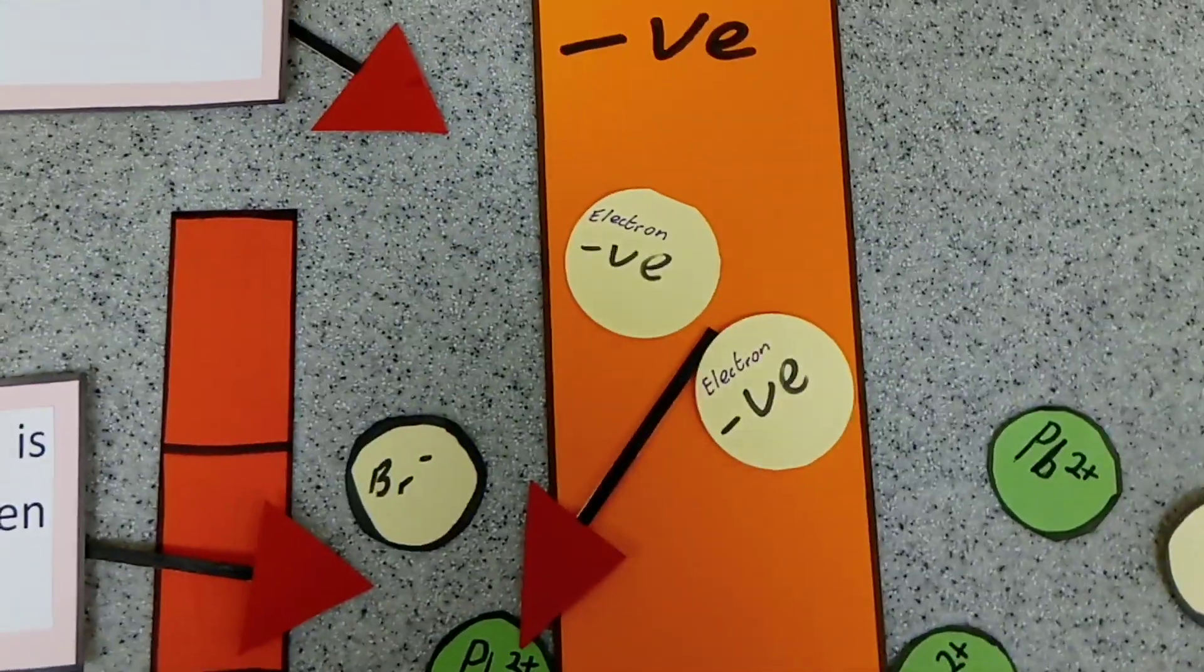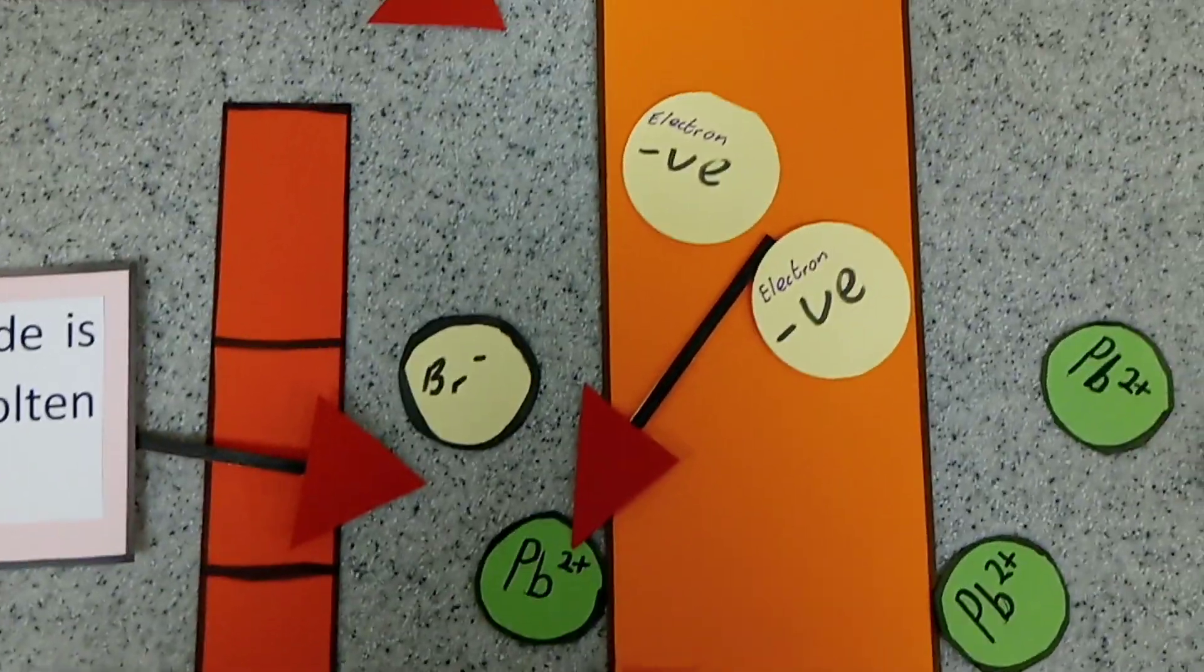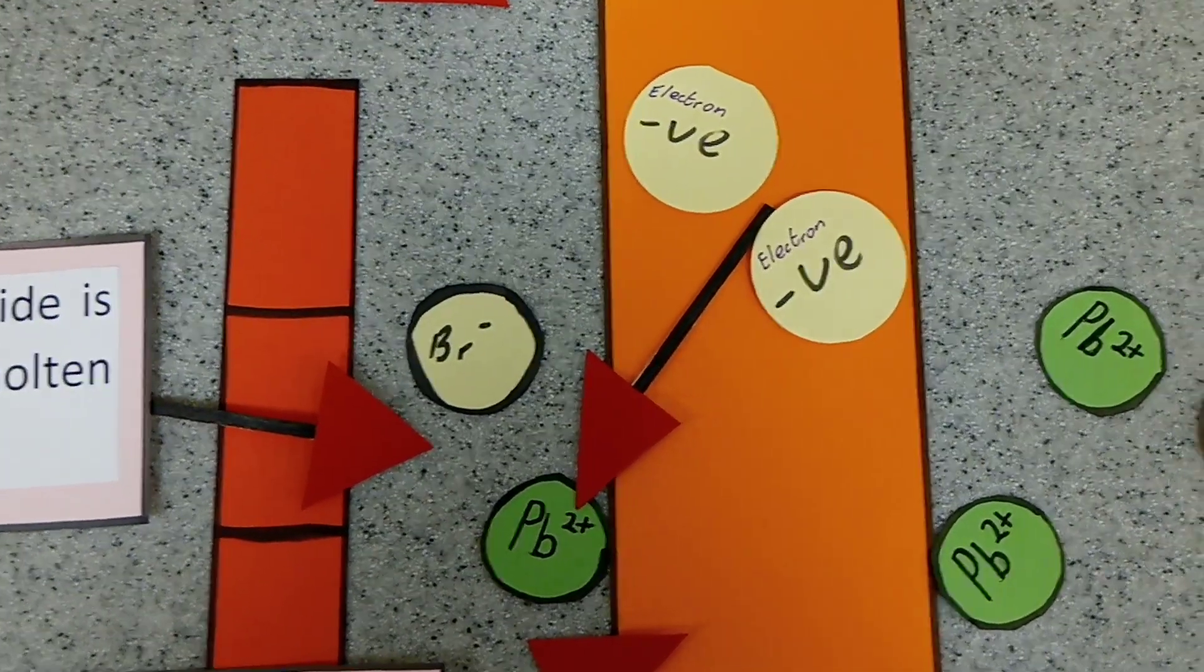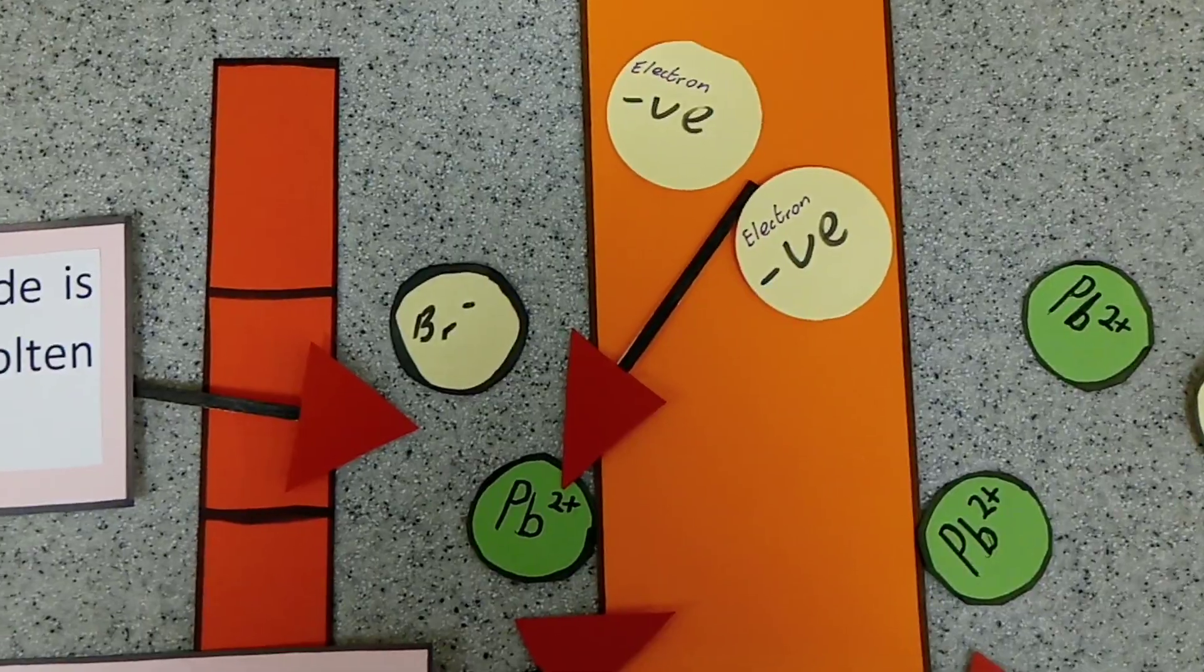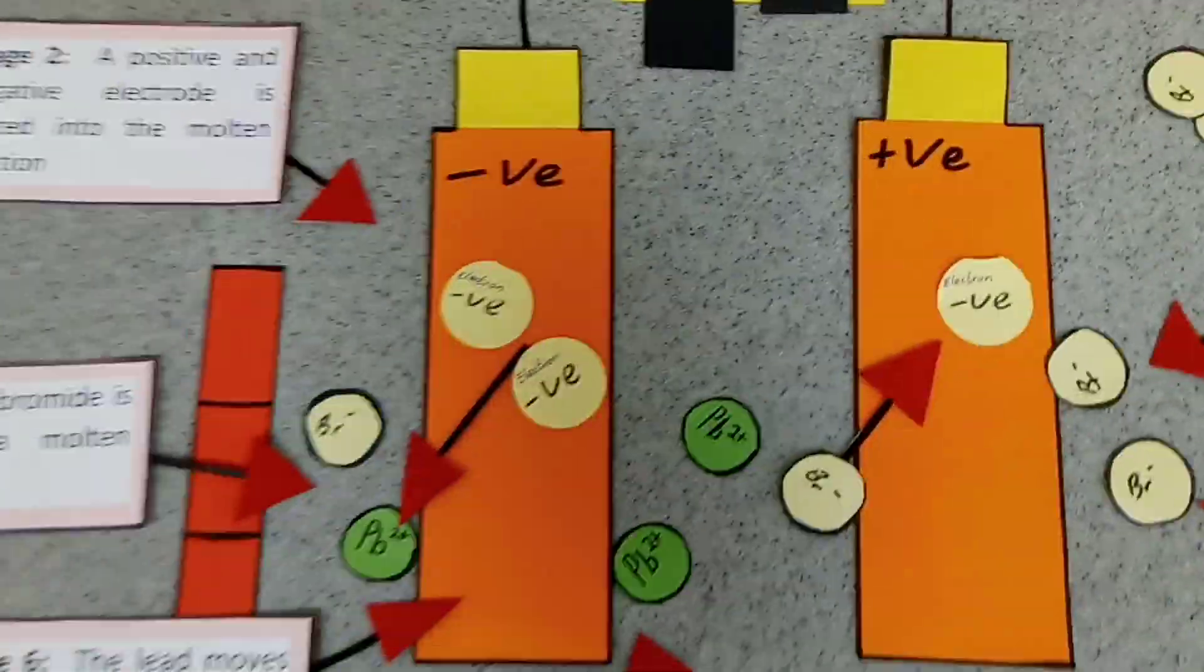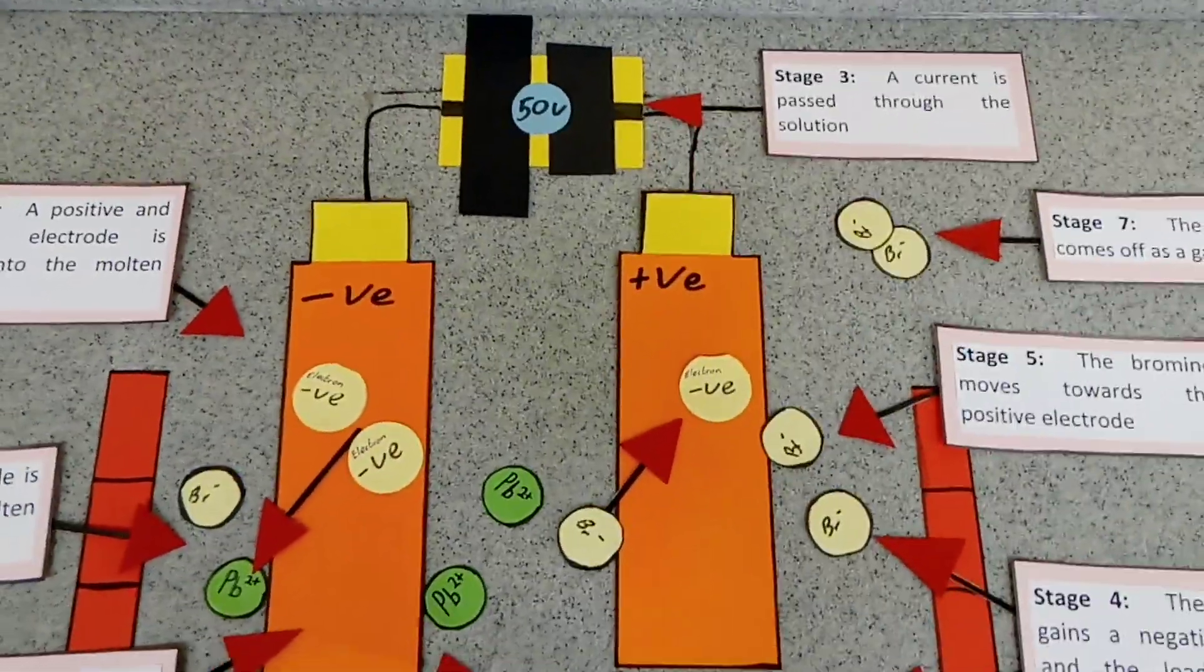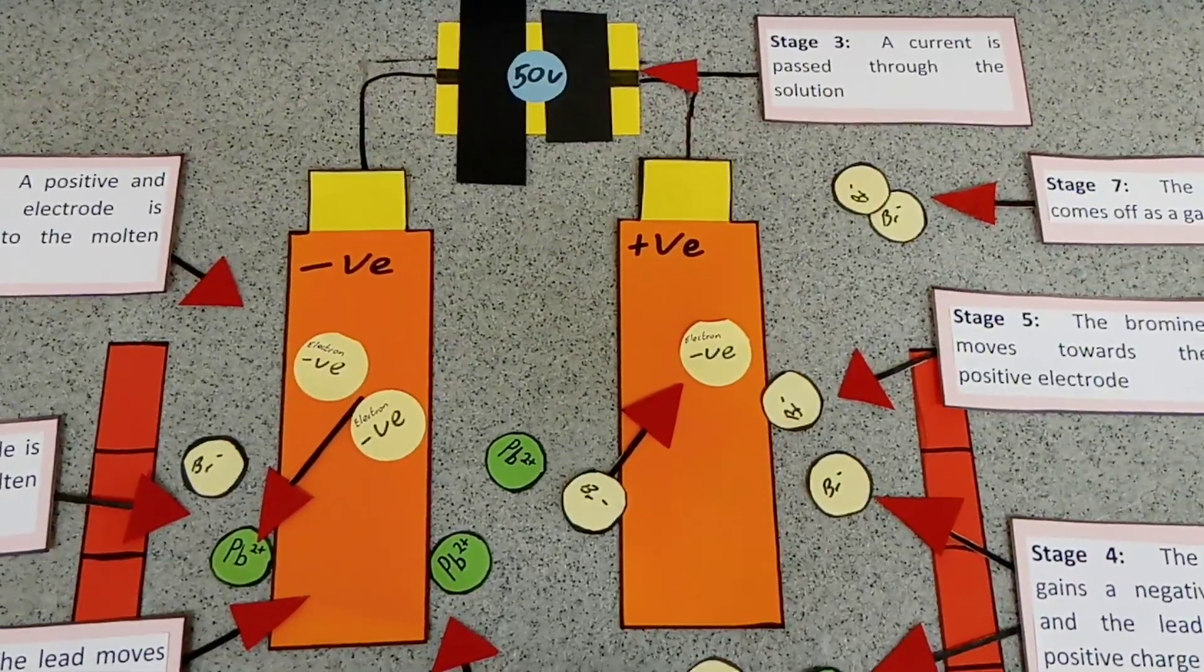At the negative electrode, the lead gains two electrons and makes lead atoms which can be collected. So that's how we carry out electrolysis of lead bromide.